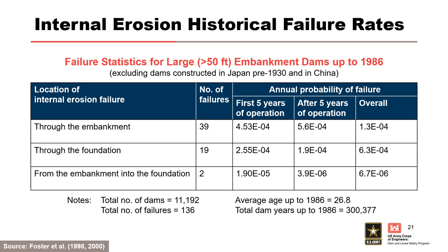Foster and others in 1998 and 2000 examined failures and accidents of large embankment dams constructed between 1800 and 1986, excluding dams constructed in Japan before 1930 and in China. Approximately one half of cases of failure in operation were due to internal erosion, and the largest number of failures occurred through the embankment — nearly one half of these were associated with conduits or walls which penetrate the embankment. Approximately two thirds of all failures and one half of all accidents occurred on first filling or in the first five years of reservoir operation. Nearly all failures through the embankment occurred when the reservoir level was at or near the pool of record. The historical annual probability of failure for locations of internal erosion are shown in this table; for a specific dam, think about factors that make a potential failure mode more or less likely to occur than these historical rates.